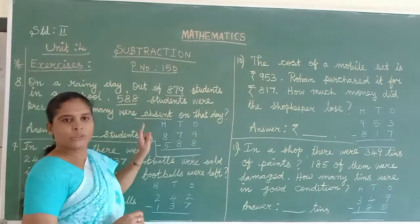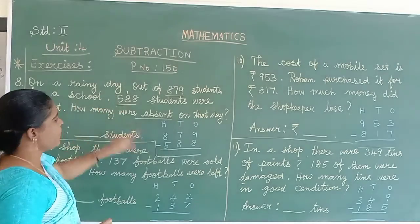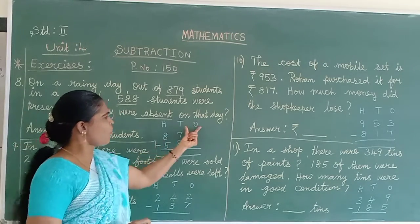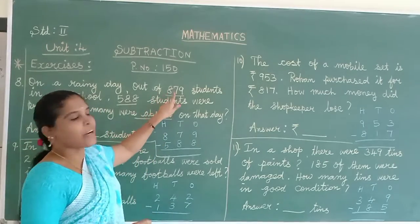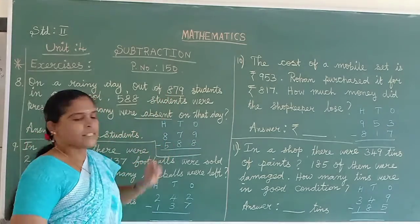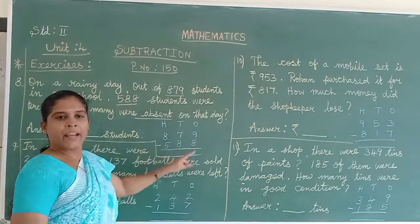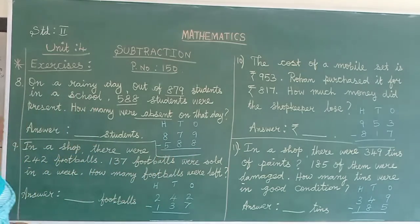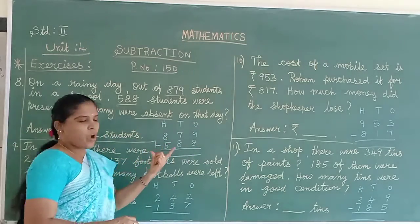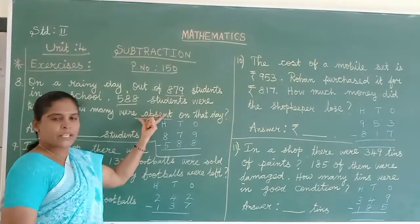We can take the total, subtract how many of them present. Make ones column, tens column, hundreds column. In a school, total number of students 879. How many of them present in a rainy day? 588. You can make a column. Then subtract from the total students how many were present to get the absentees.